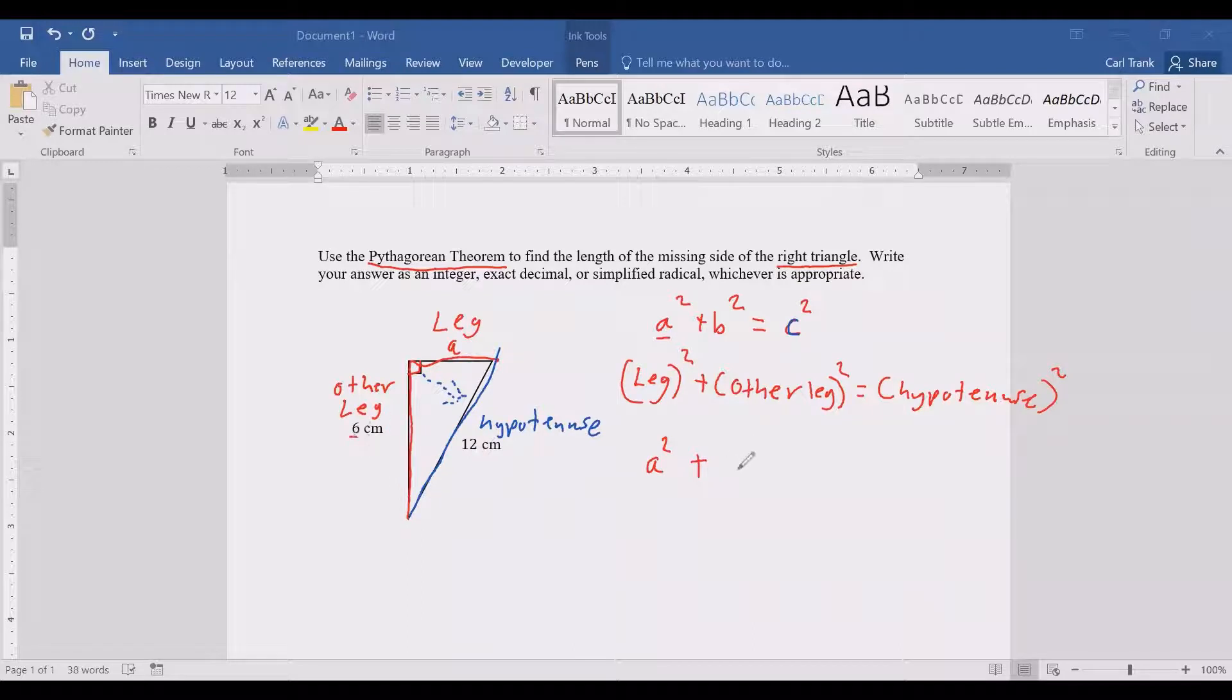The other leg is 6. So we have A squared plus 6 squared equals the hypotenuse squared. The hypotenuse is 12. So our equation is A squared plus 6 squared equals 12 squared. Now let's compute 6 squared equals 36 and 12 squared equals 12 times 12 which is 144.